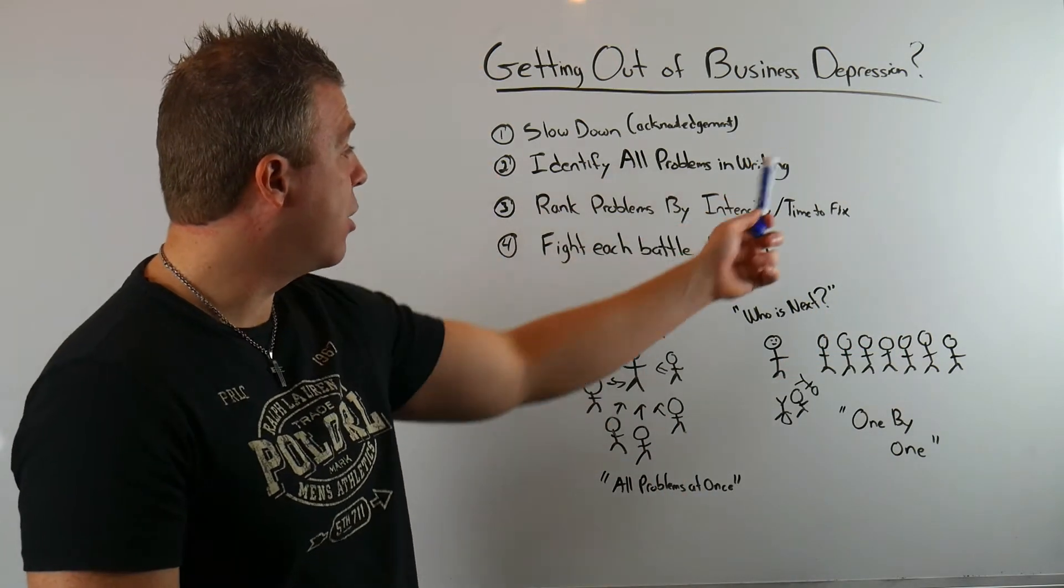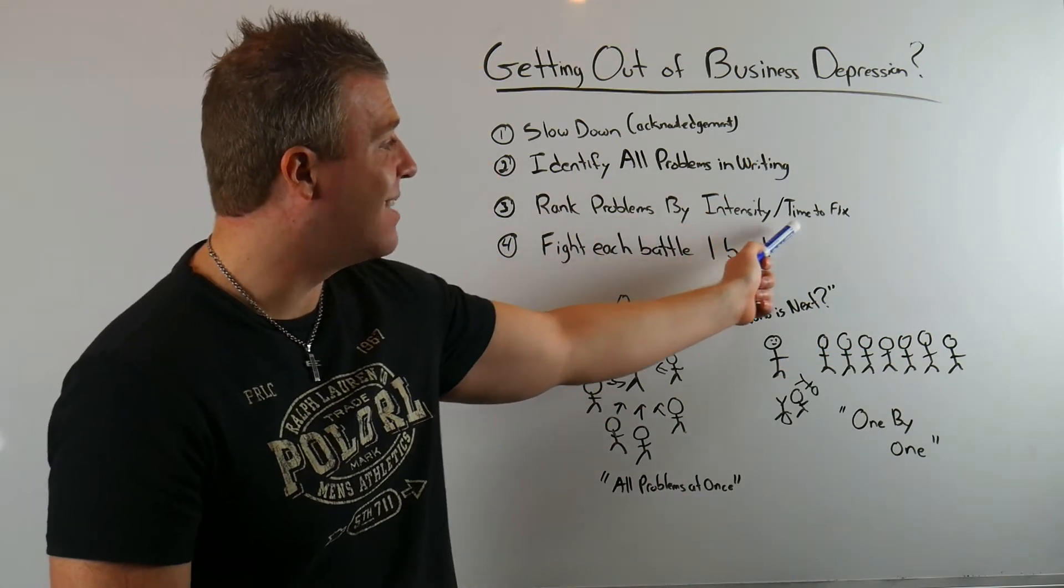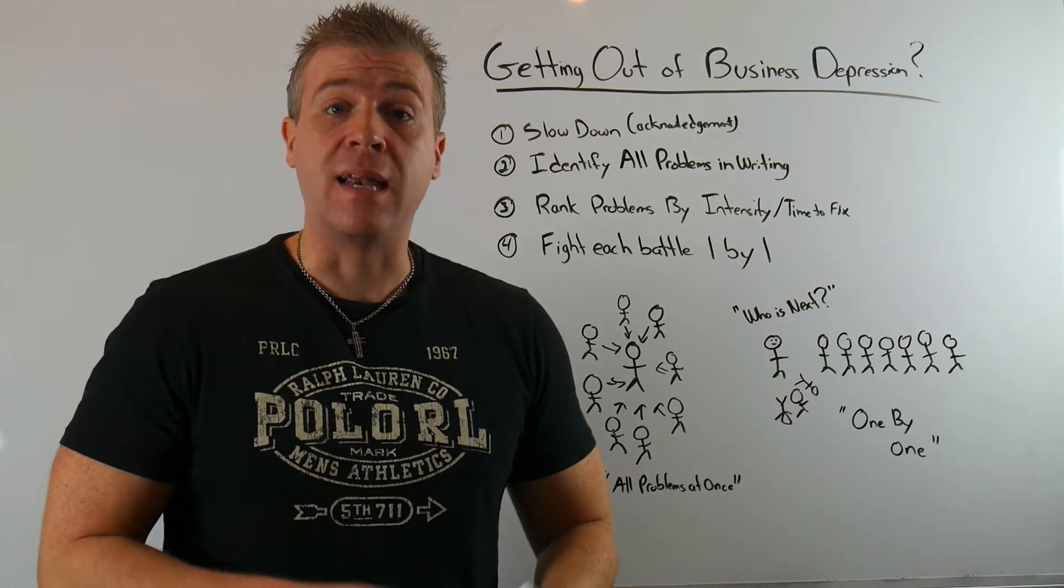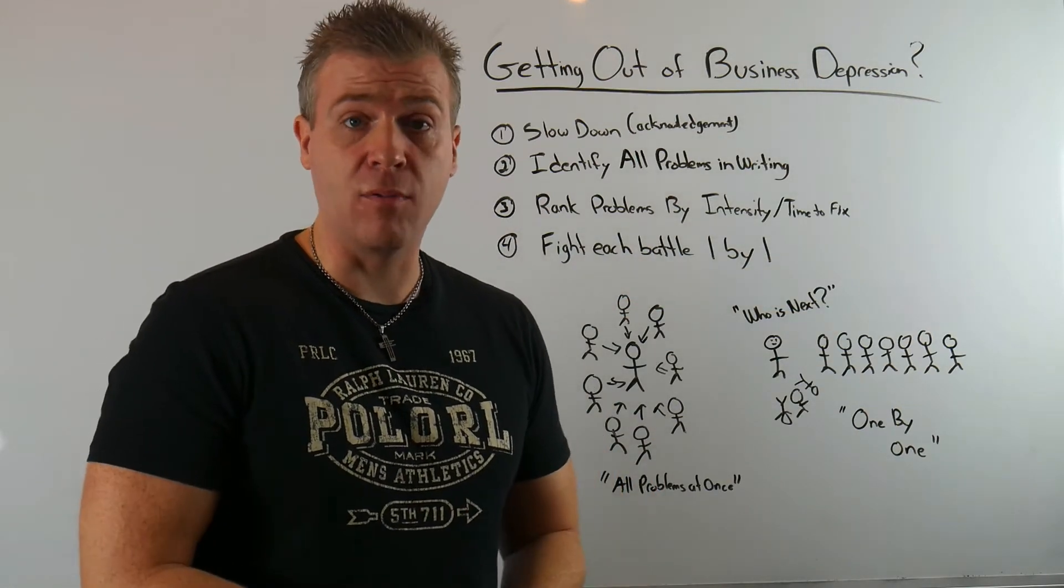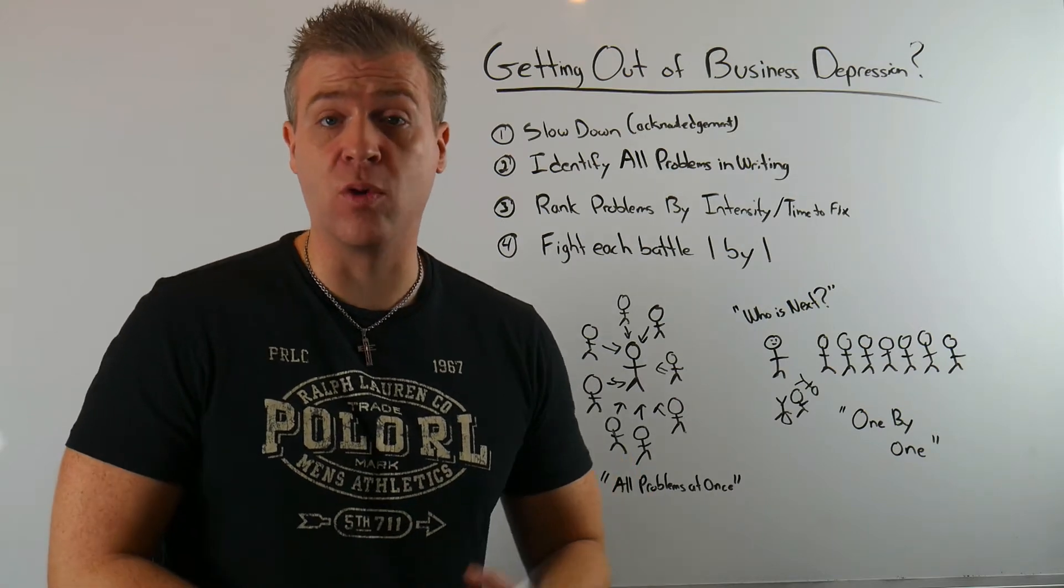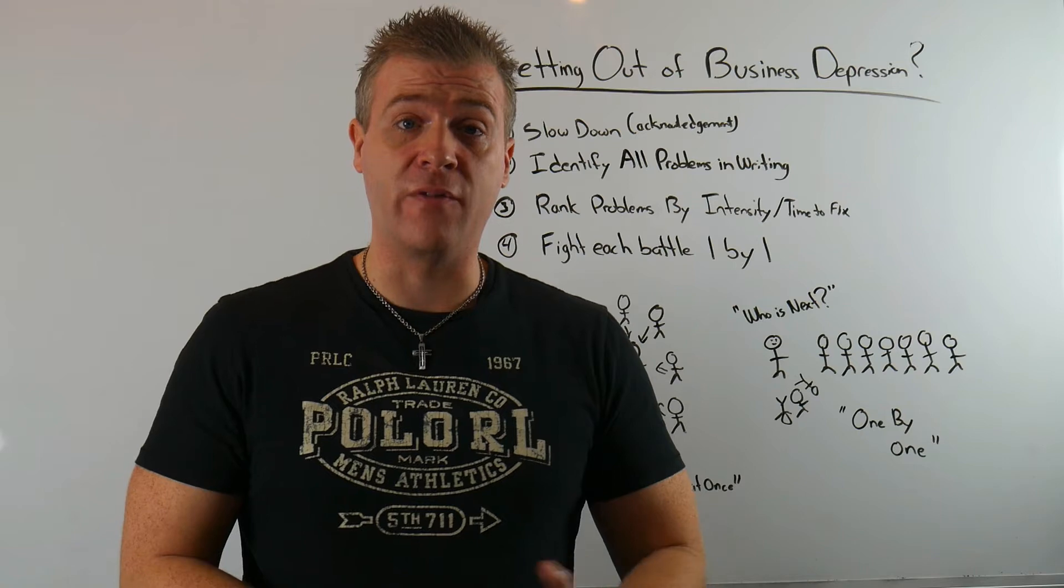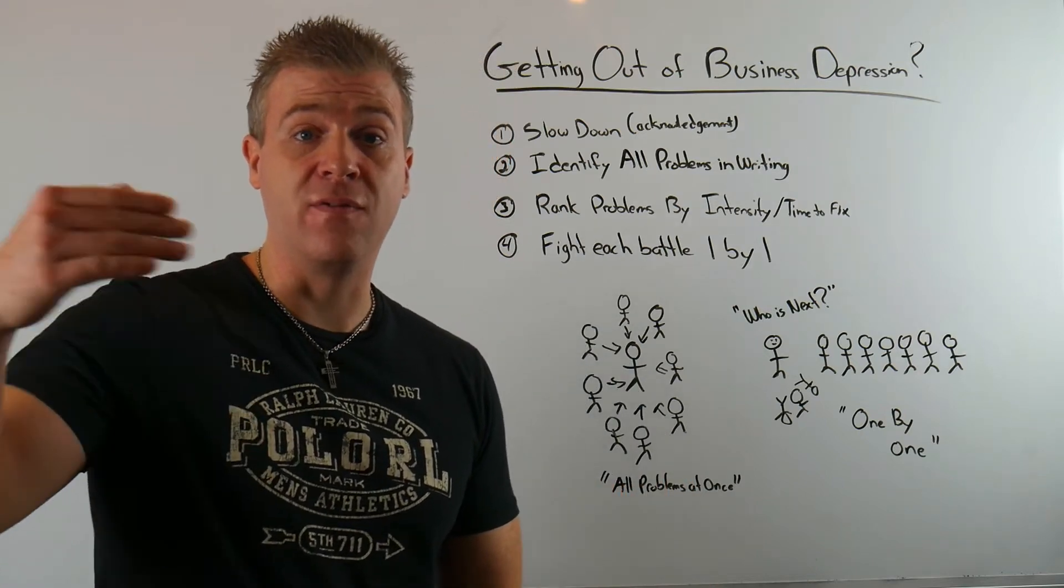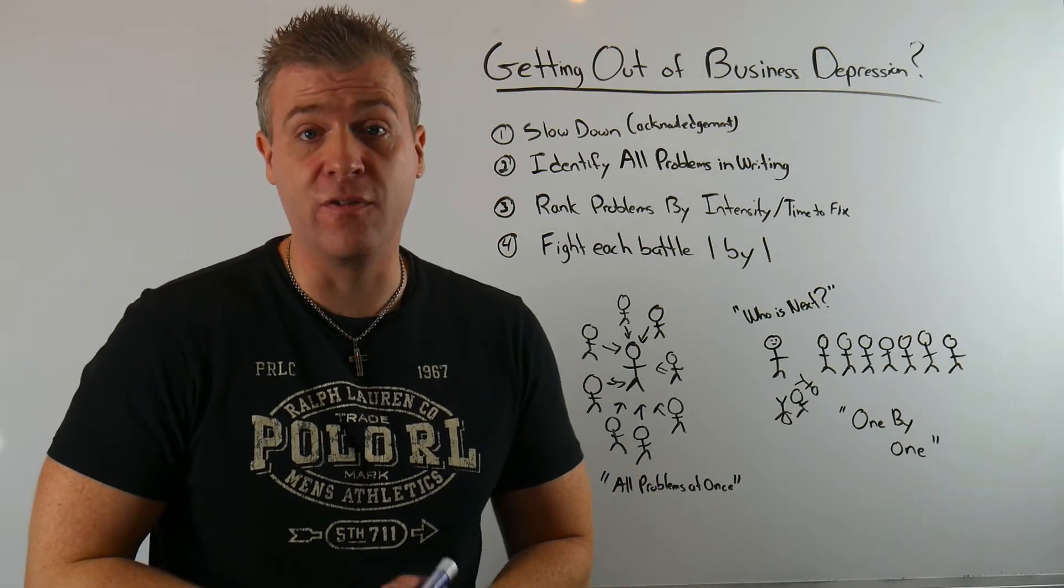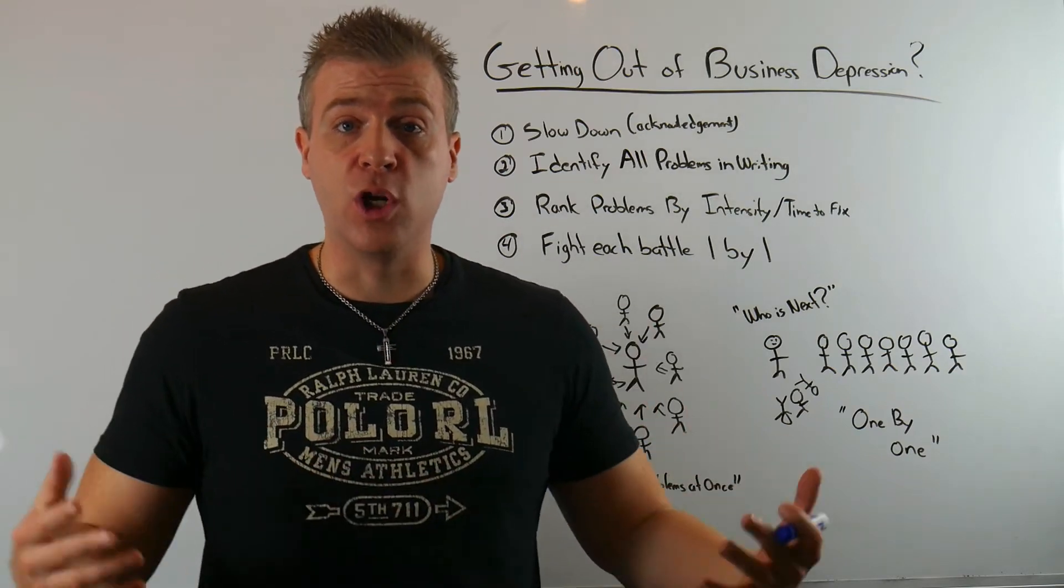Rank these problems by intensity and time to fix or cost to fix. Now you need to identify which ones you can take on right now, which ones are quick fixes, which ones are long fixes, which ones are going to take a big effort, which ones will take a small effort, which ones are expensive. Do you have the money to fix it? Because some of these guys you're not going to be able to fix for a while. So rank them and figure out which ones you can take one by one.